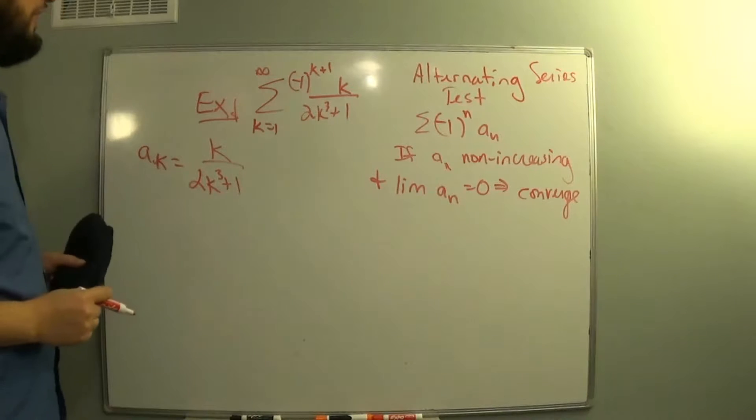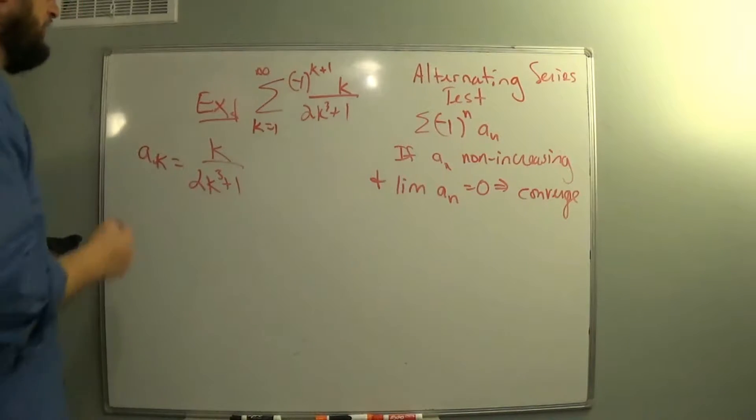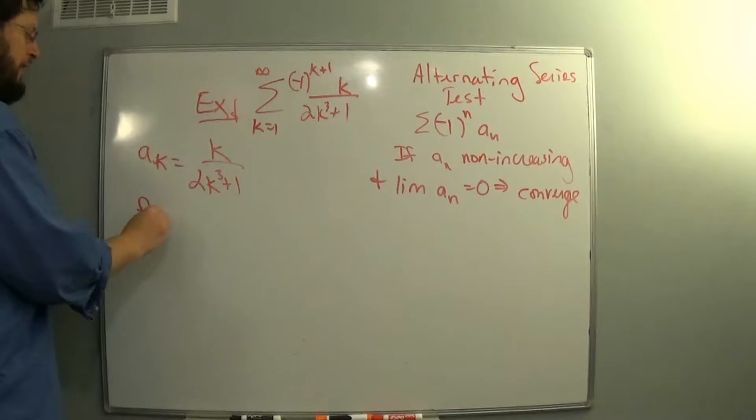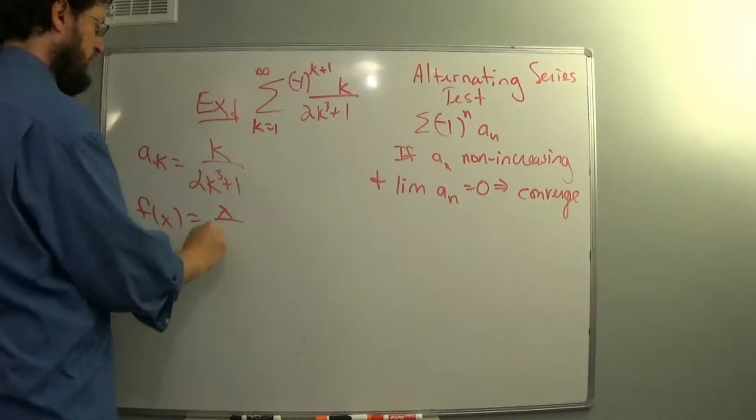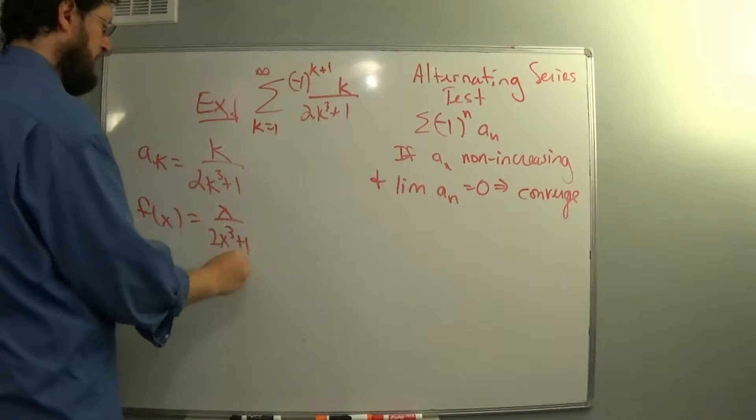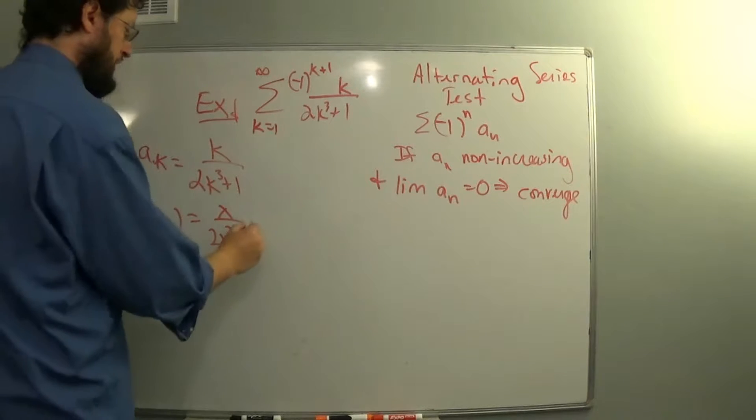And we say, is it always decreasing, or at least non-increasing? So we look at f of x, x over 2x cubed plus 1, and then we take its derivative.